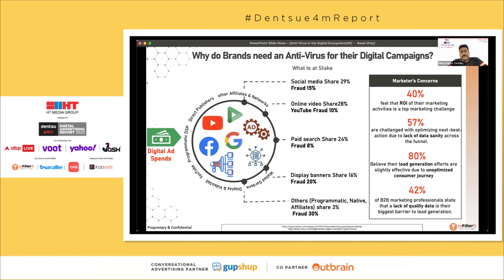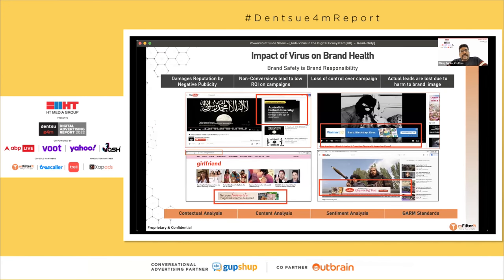It's important to understand that your ROI in your digital transformation program will be massively impacted if you don't bring in an antivirus — and this is agnostic to social media, YouTube, search, display, and programmatic campaigns. On brand safety: everyone understands that brands should appear to the right audience, in the right content, in the right placements. But how is that being enforced? Here are examples of campaigns running on YouTube where brand safety was massively impacted and placements were completely incorrect.